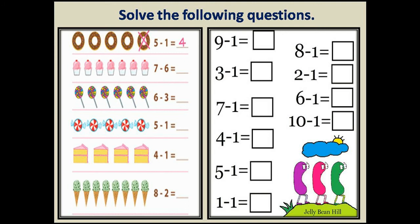Isi tarah se jab hum seven ice creams mein se six ice creams ko cross karengi to answer aayega one ice cream. Matlab seven minus six is equal to one. Is easy method se aap apni worksheet complete kar sakte hain.